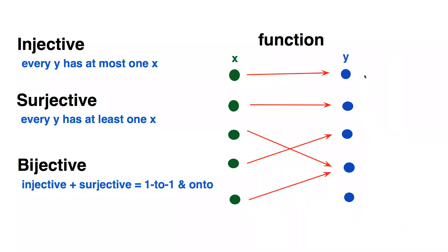Now if we take away this extra y, we have a surjective function where every y has at least one x.